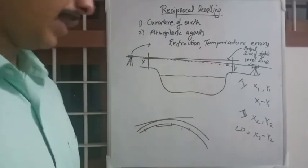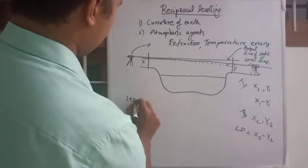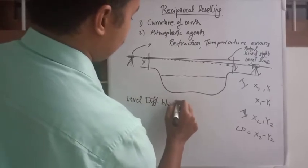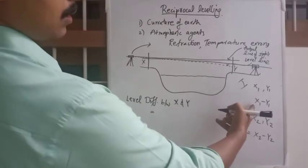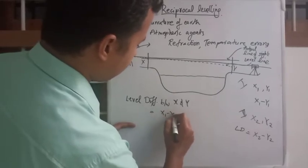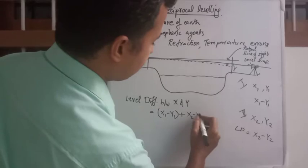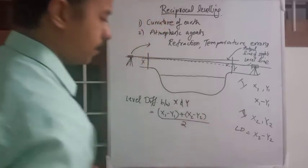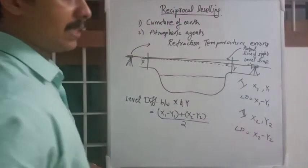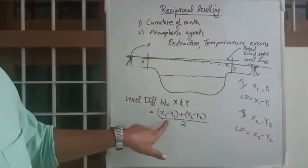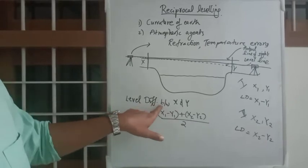To calculate the accurate level difference between X and Y, we have an equation: the accurate level difference between X and Y equals the level difference from the first instrument setup (x1 minus y1) plus the level difference from the second instrument setup (x2 minus y2), divided by 2. We are simply taking the average of these two level differences. That will give you the actual level difference between X and Y.